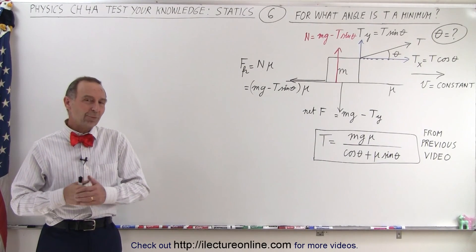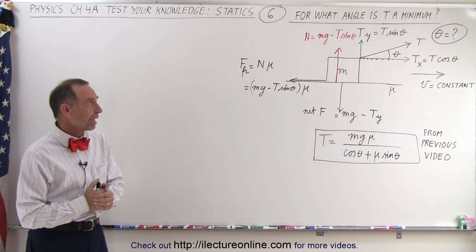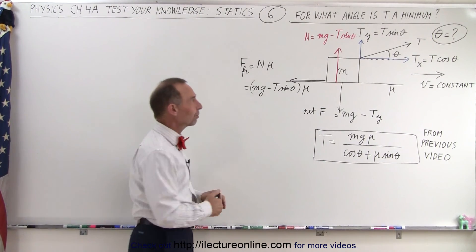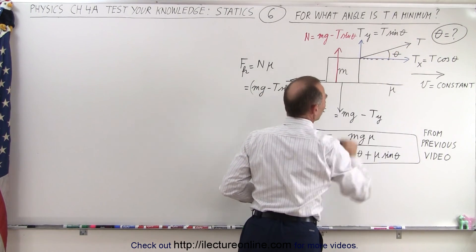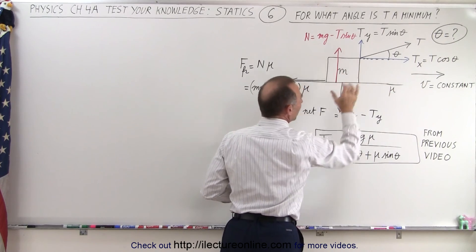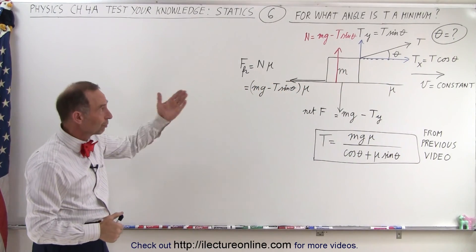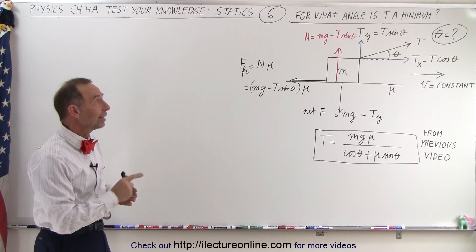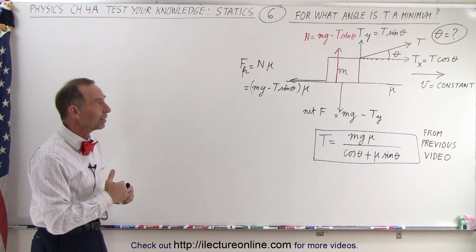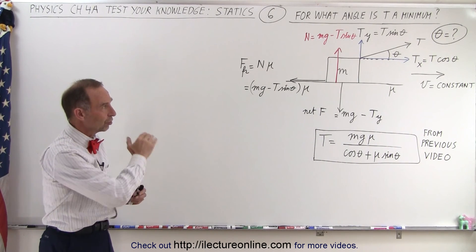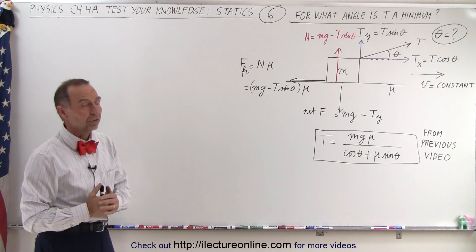Welcome to What Lector Online. In the previous video, we found the tension in this particular case, where we have a block being pulled across the floor at an angle — the tension with an angle with the horizontal equal to theta. There was friction between the block and the floor, and we found the equation that describes the tension in terms of everything else. Now we're trying to find the angle at which we'll have the minimum tension. For what angle theta will we require the minimum amount of tension to pull the box across the floor at a constant velocity?